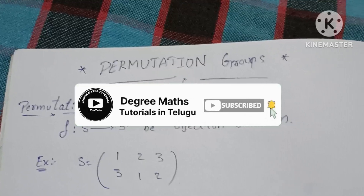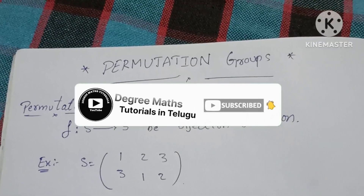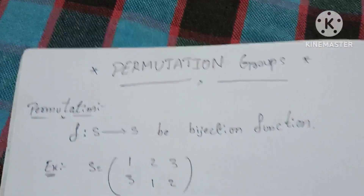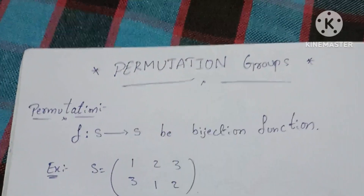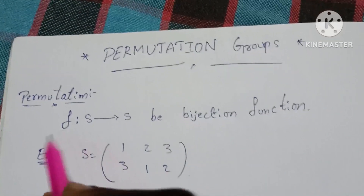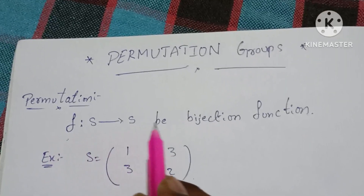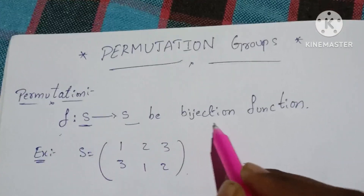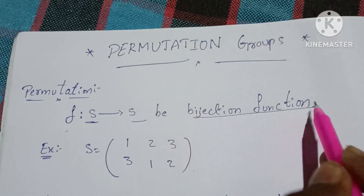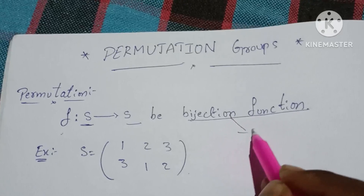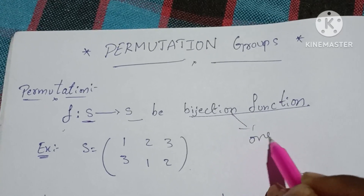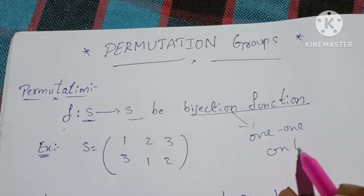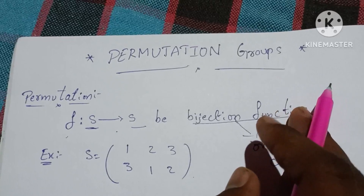We are going to start Permutation Groups. Permutation means F from S to S — same sets — meaning a bijection function. And bijection means a one-to-one onto function between the same sets.